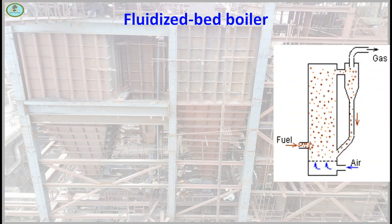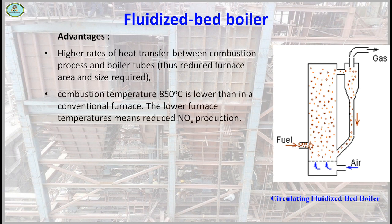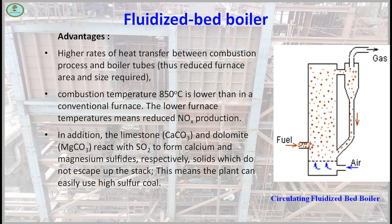CFBC/FBC boiler advantages: higher rate of heat transfer between the combustion process and boiler tubes, thus reducing furnace area and size required. Combustion temperature is around 850 degrees Celsius — lower than in a conventional furnace — meaning reduced NOx production. In addition, limestone and dolomite react with sulfur dioxide to form calcium and magnesium sulphates respectively as solids, which do not escape up the stack. This means the plant can easily use high-sulfur coal.